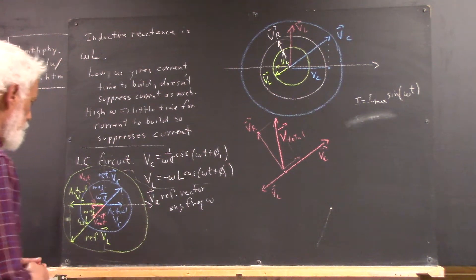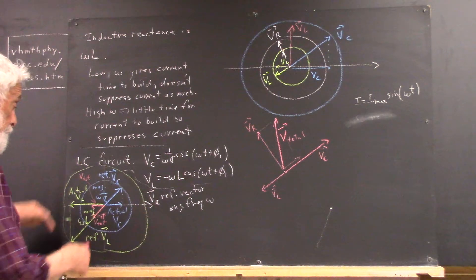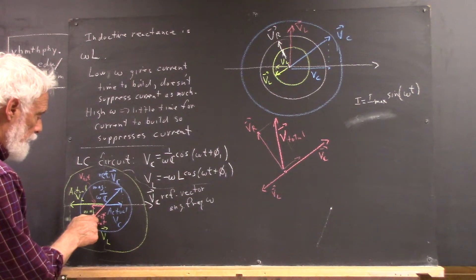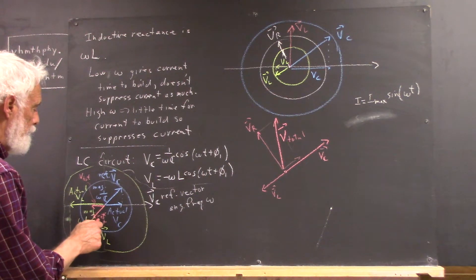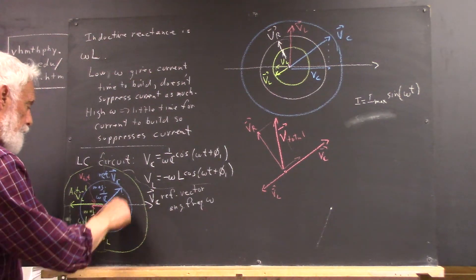But, your final picture here is the total voltage across your LC is just what you get as this reference vector, V total vector, goes around here. So, you're going to have a circle.